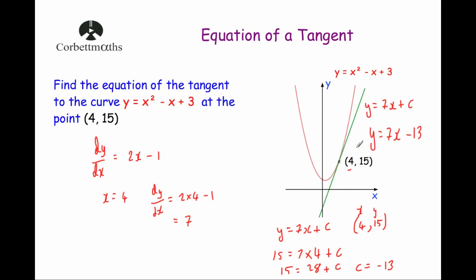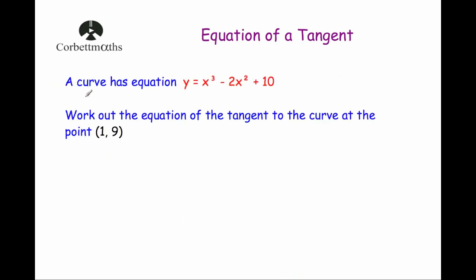So let's have a look at our second question. A curve has the equation y equals x cubed minus 2x squared plus 10, and we've been asked to work out the equation of the tangent to the curve at the point (1, 9). So we've got the equation of the curve, y equals x cubed minus 2x squared plus 10, and it would be really great to work out the gradient of the curve at that point, because that would give us the gradient of the tangent.